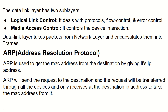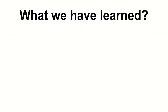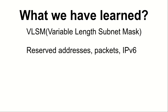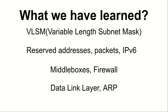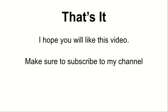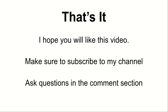We won't discuss the physical layer in this 100-days challenge, as it requires a lot of detail and mostly deals with hardware devices. To summarize today's topics: VLSM (Variable Length Subnet Mask), reserved addresses, packets, IPv6, middle boxes, firewalls, the Data Link Layer, and ARP. If you like this video, subscribe to the channel and ask questions in the comments below.